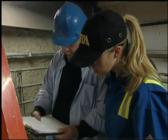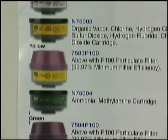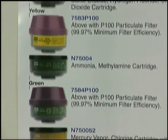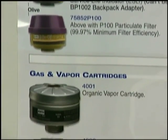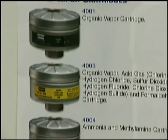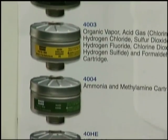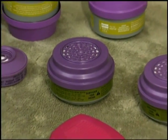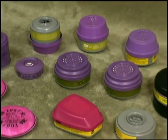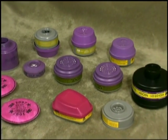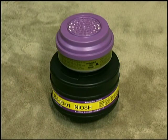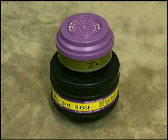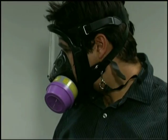Air purifying respirators draw air through a cartridge or filter. The hazard assessment will determine the type of cartridges and filters required. Replaceable filters remove specific contaminants only — make certain you have the right cartridge or canister for your job requirements. Choosing the wrong cartridge may endanger your health. These filter devices are all labeled and color-coded for easy identification.